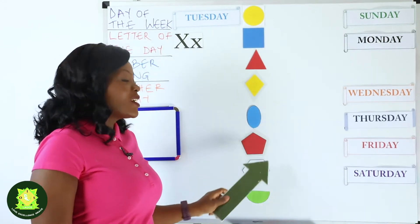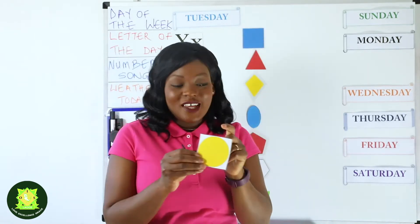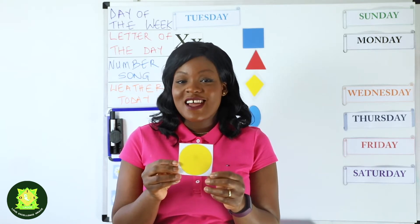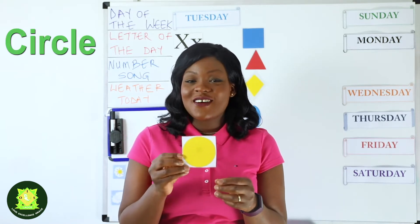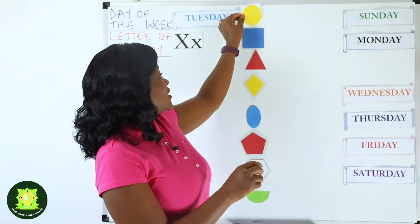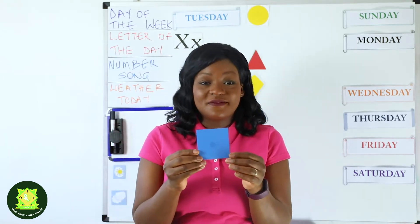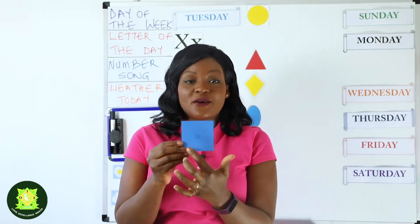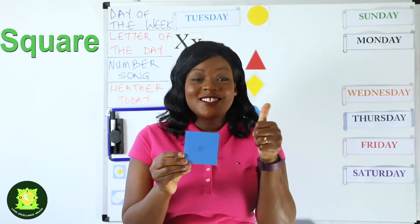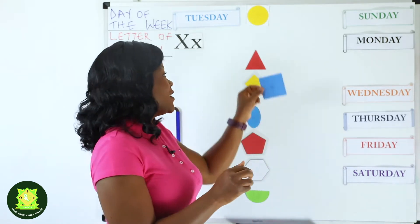Can you see my board? I have some lovely shapes on my board. Over here I have a round shape. Can you tell me what shape this is? This is a circle. Well done if you said circle. And now I have another shape here — this shape has four equal sides and it's called a square. Good job and well done if you said square.